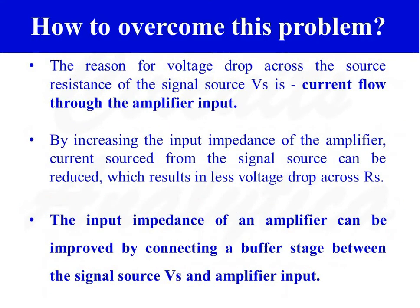How do we overcome this problem of voltage drop across the series source resistance RS? The reason for the voltage drop is current flow through the amplifier input. By increasing the input impedance of the amplifier, the current drawn from the signal source can be reduced, which results in less voltage drop across resistance RS.